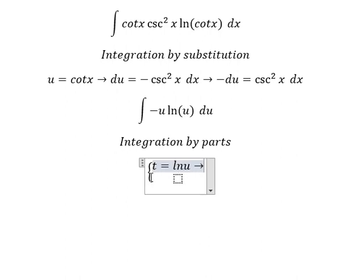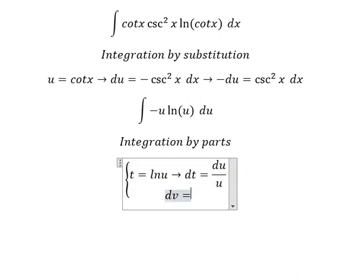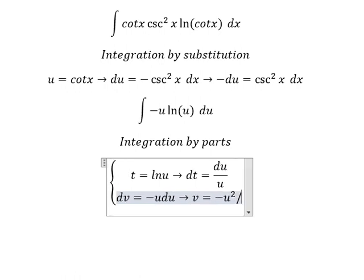We differentiate to get dt = du/u, and set dv = -u du. Integrating dv gives us v = -u²/2.